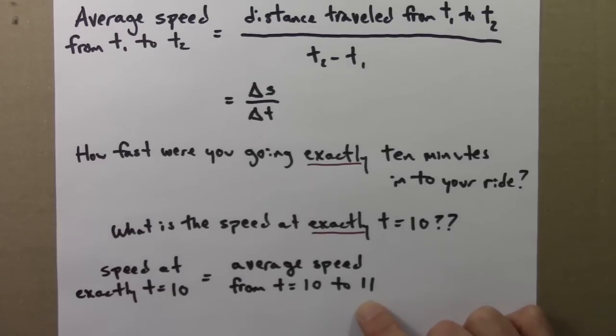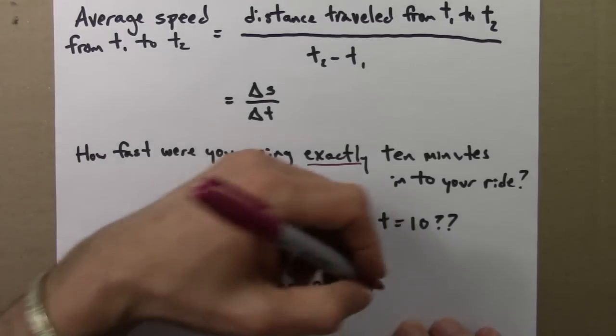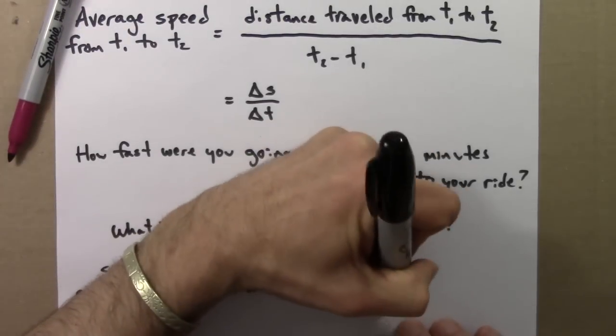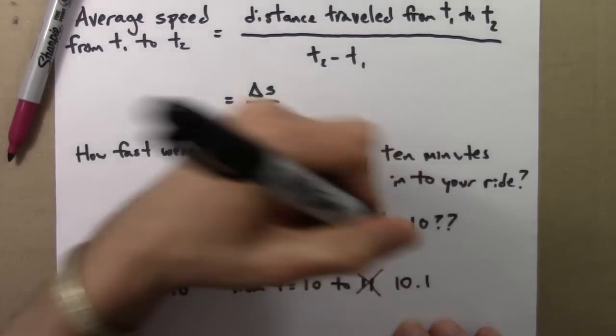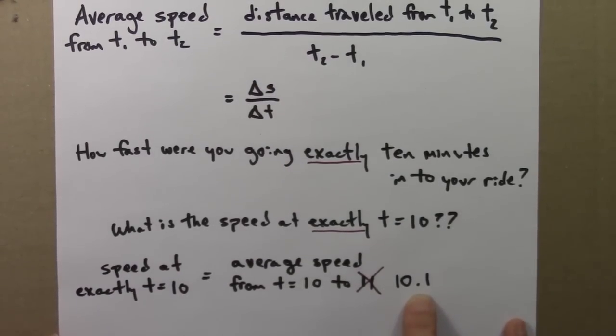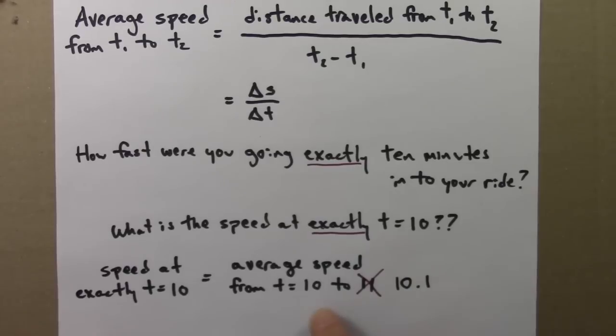So that's a reasonable objection, actually. Here's one way we could address it. We could say, okay, yeah, you're right. The speed might be changing from 10 to 11. So what if I consider a smaller interval? I'll go from 10 to 10.1. That's just a tenth of a minute. Surely the speed isn't changing much, so the average speed is a good approximation to the speed exactly at t equals 10.